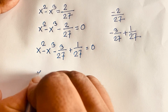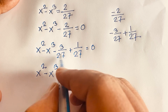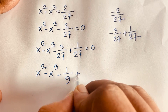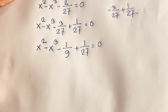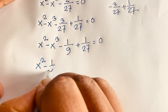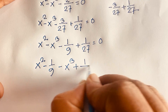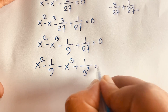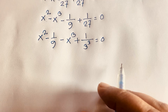Now I can group the terms: x squared minus 1 over 9 (since 3 divided by 27 equals 1 over 9), and minus x cubed plus 1 over 27. Note that 27 is equal to 3 cubed, so this equals 0.